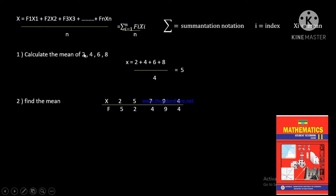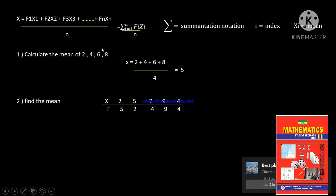For example, the mean of 2, 4, 6, and 8: the mean is equal to 2 plus 4 plus 6 plus 8, divided by 4, because there are 4 elements. The sum is 20 divided by 4.